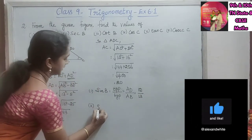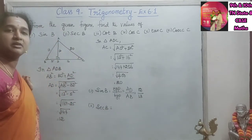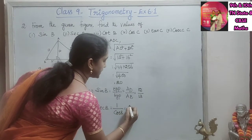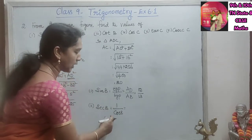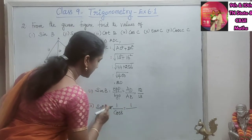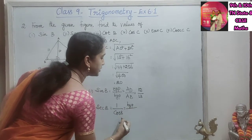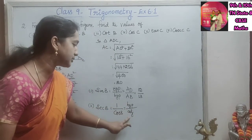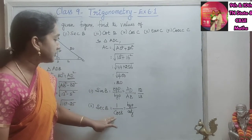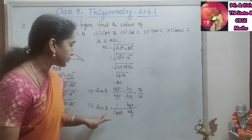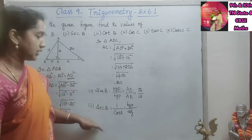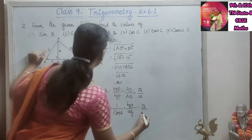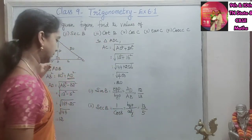The second one is secant B. Secant B is the reciprocal of cos, that is 1 by cos. Cos is adjacent by hypotenuse, so secant is hypotenuse by adjacent. Secant B equals hypotenuse 13 by adjacent side 5. So secant B is 13 by 5.